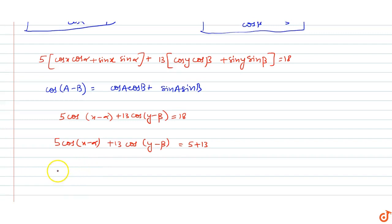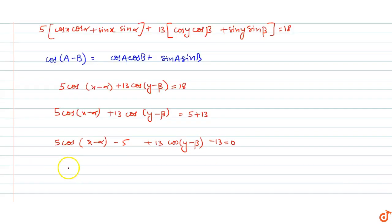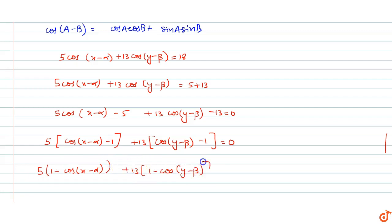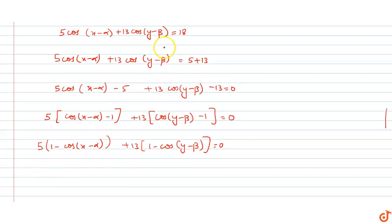सारी terms एक साइड लें तो मिलेगा: 5·cos(x−α) − 5 + 13·cos(y−β) − 13 = 0. 5 और 13 को common लेने पर: 5·(cos(x−α) − 1) + 13·(cos(y−β) − 1) = 0. दोनों terms दूसरी साइड ले जाएं: 5·(1 − cos(x−α)) + 13·(1 − cos(y−β)) = 0.